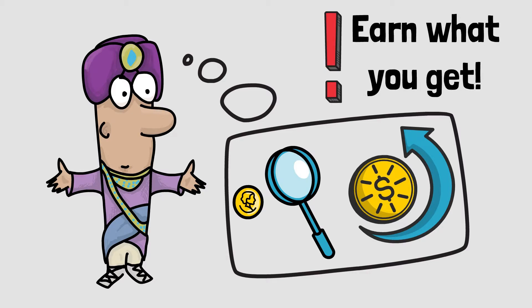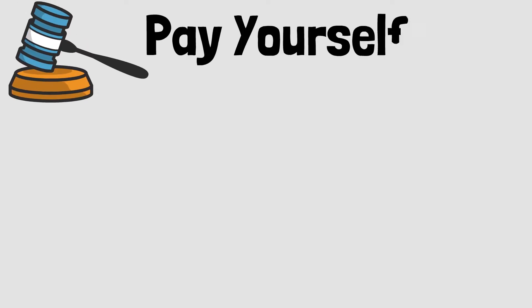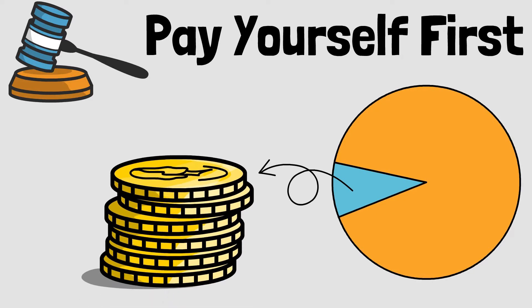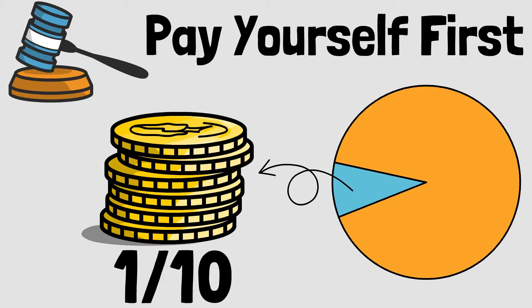It is important to earn what you get. The first law of building wealth is to pay yourself first. No matter how much or how little you earn, always make sure that at least one tenth of your earnings go towards paying yourself. Every coin that you save will go towards working for you.